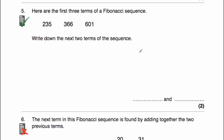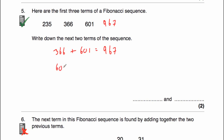Let's have a look at our next question, question number five. Question number five is a calculator question, and it says here are the first three terms of a Fibonacci sequence. We've got 235, 366, and 601. We've been asked to write down the next two terms. To get our 601, it should be 235 plus 366, and that is correct. So to get the next term, we're going to add 366 and 601: 366 plus 601 is equal to 967. And then to get the next one, 601 plus 967 is equal to 1,568. So the next two terms of our Fibonacci sequence were 967 and 1,568.